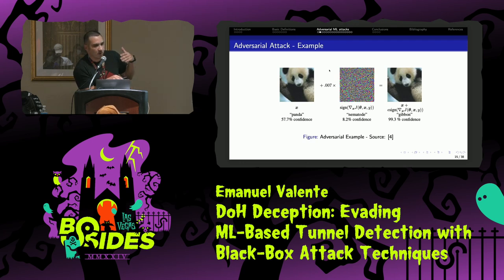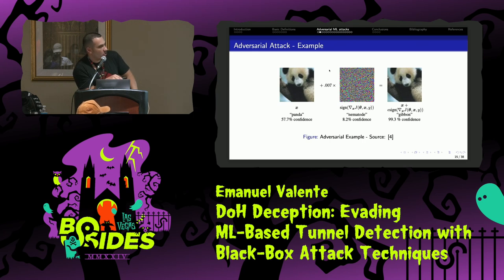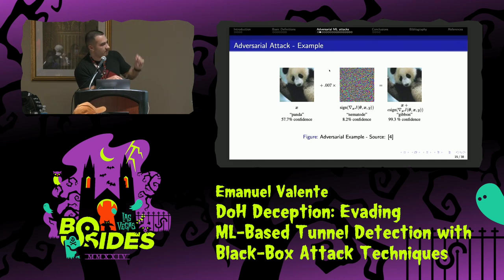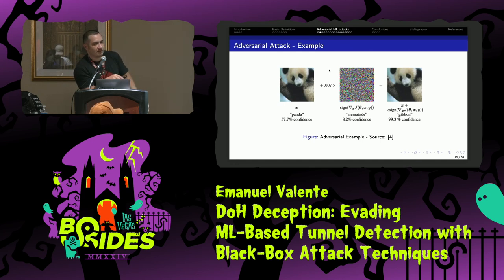Here's an example using images from the Goodfellow paper. On the left side we have a panda. In the middle we have a perturbation — it looks like random bytes, but there's logic behind it. Because when I sum up the two images, the third image is the result of the sum. At the end, the last image is classified as a gibbon — a kind of monkey.